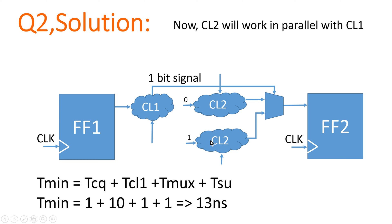One very important thing to mention: the other inputs coming to combination logic 1 and combination logic 2 do not have any impact on the critical path, because I am considering that they come directly from the output of flip-flops — so their TCQ is 1 nanosecond and their propagation impact inside the logic is only 1 nanosecond, as per our assumption. Otherwise those three paths would be our dominating critical paths.